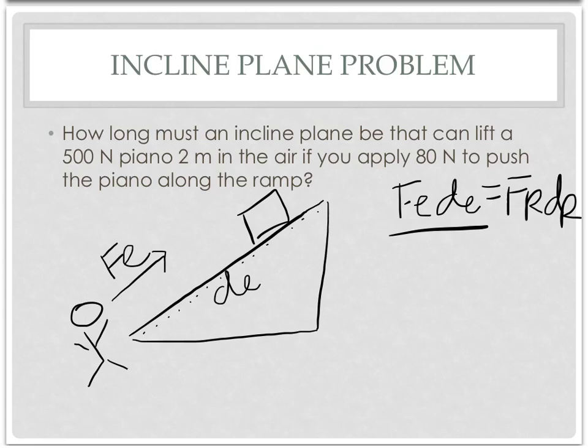Now, your FR and DR come from the object. The object's going to have some sort of weight in Newtons, that is your FR. And then it's also going to have, the ramp will have a height, which will be your DR. So let's apply this to a problem.